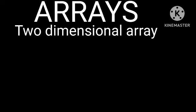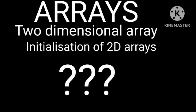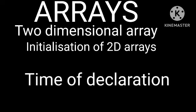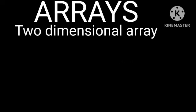Initialization of 2D arrays means assigning values at the time of declaration. The syntax is: array_name[row][col] = {row1 values, row2 values, ..., rowN values}.